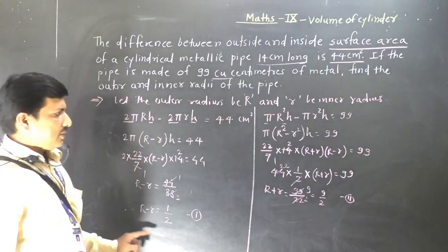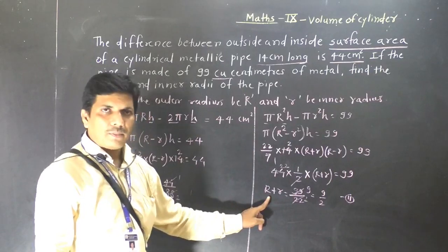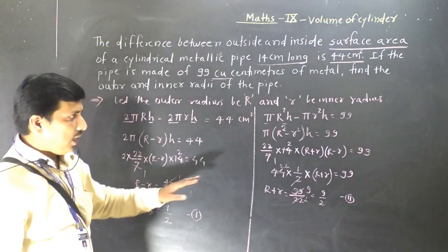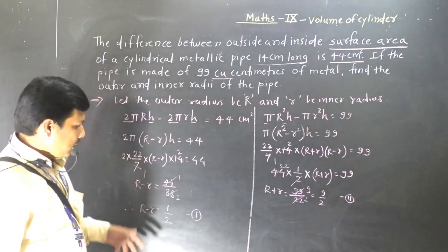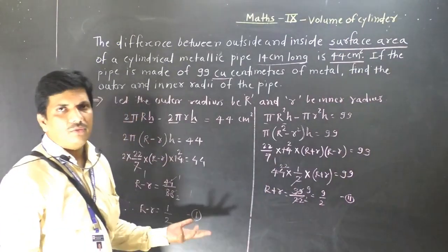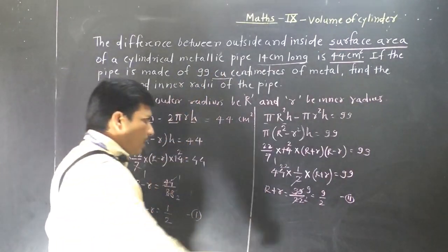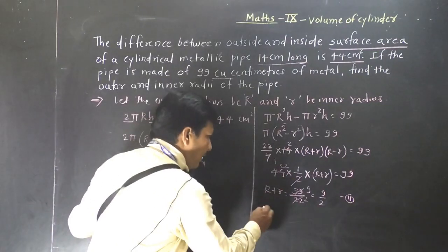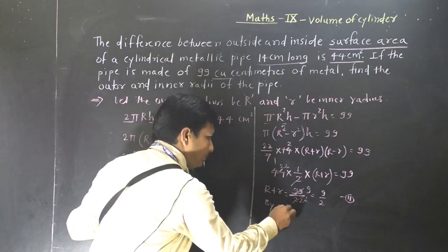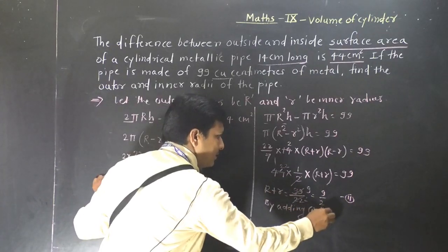So from equation 1 we have R minus r, and from equation 2 we have R plus r. Now we have two equations. If we add equation 1 and equation 2, we will get the values of both radii.